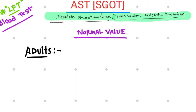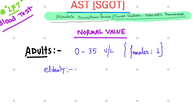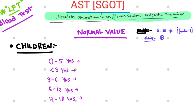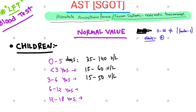The normal value for AST in adults is around 0 to 35 units per litre. In females, the value is slightly lower than males, and in the elderly population, it is slightly higher. For children, the values differ with age: 4 to 5 days of age — 35 to 140; less than 3 years — 15 to 60; 3 to 6 years — 15 to 50; 6 to 12 years — 10 to 50; and 12 to 18 years — 10 to 40 units per litre.